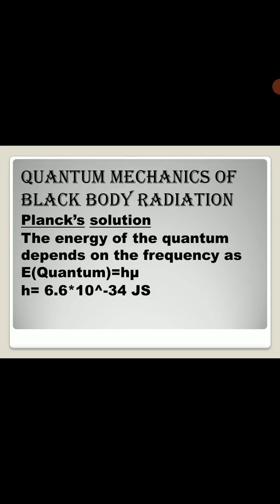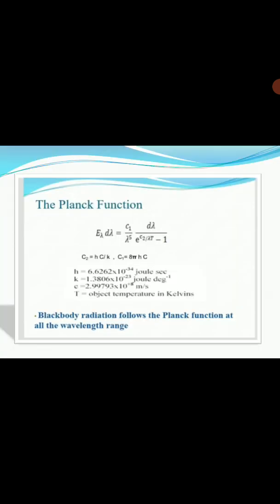Now quantum mechanics of Planck black body radiations. Planck assumed that radiation emitted by the body is due to oscillation of electrons in constituent particles of the material body. Electromagnetic waves cannot radiate or absorb energy arbitrarily but only in discrete quantum amounts. The energy of the quantum depends on the frequency as E quantum equals h nu, where h is Planck constant with value 6.6 multiplied by 10 to the power minus 34 Joule second.